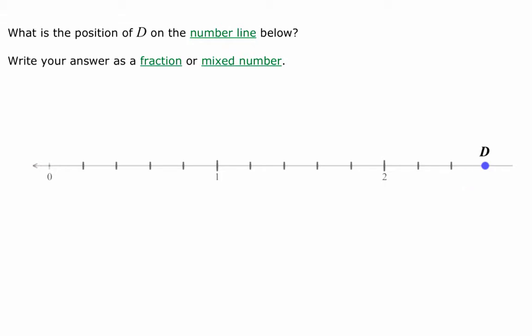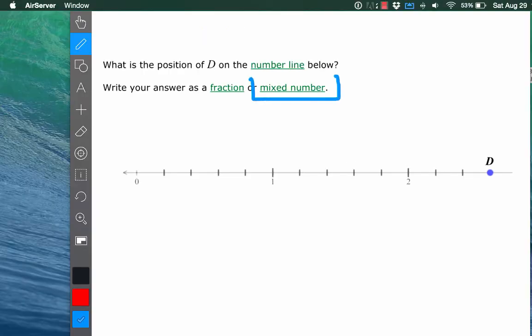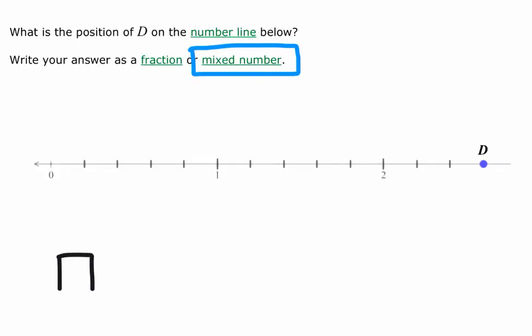As you might already know, a mixed number is composed of a whole number and a fractional part. Now let us start looking at this whole number. Because D comes after the whole number 2, then this 2 represents the whole number of the mixed number.